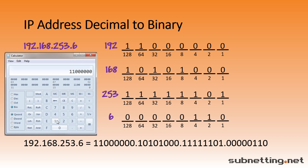168. Then we click on Binary again, and there it is. That's the same number we calculated. Click on Decimal, and then 253. Click over to Binary, and sure enough, that's the same number. And lastly, we'll do 6. And great, that's the same number we calculated.